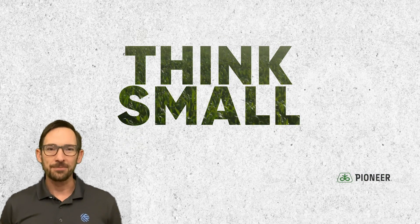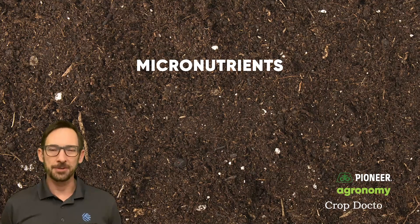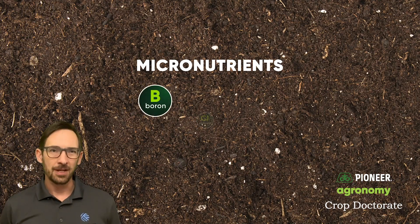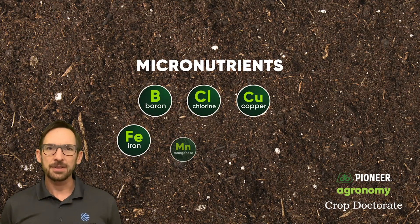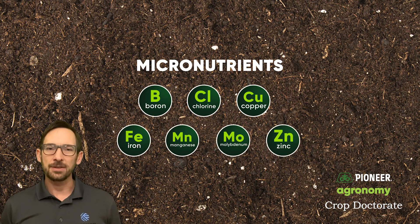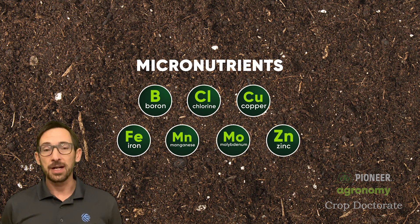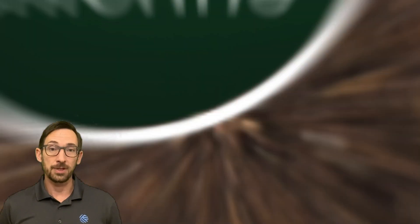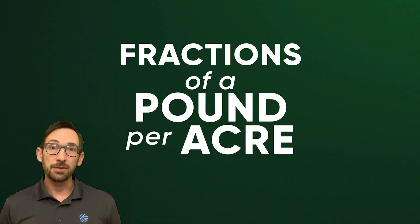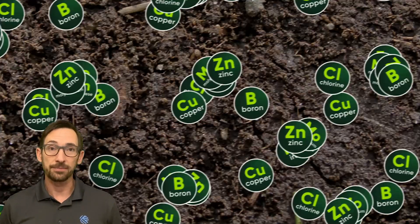Today we're going to think small, as in micronutrient small. Micronutrients are a set of elements that are absolutely essential for plant growth, but are taken up and removed by the crop in very small quantities, on the order of fractions of a pound per acre.